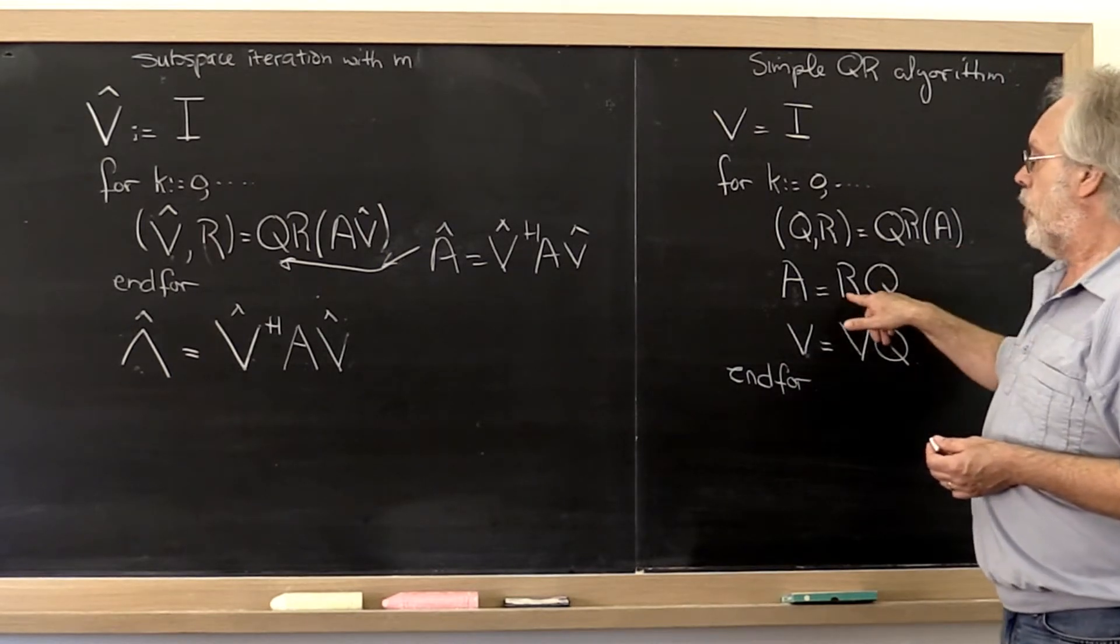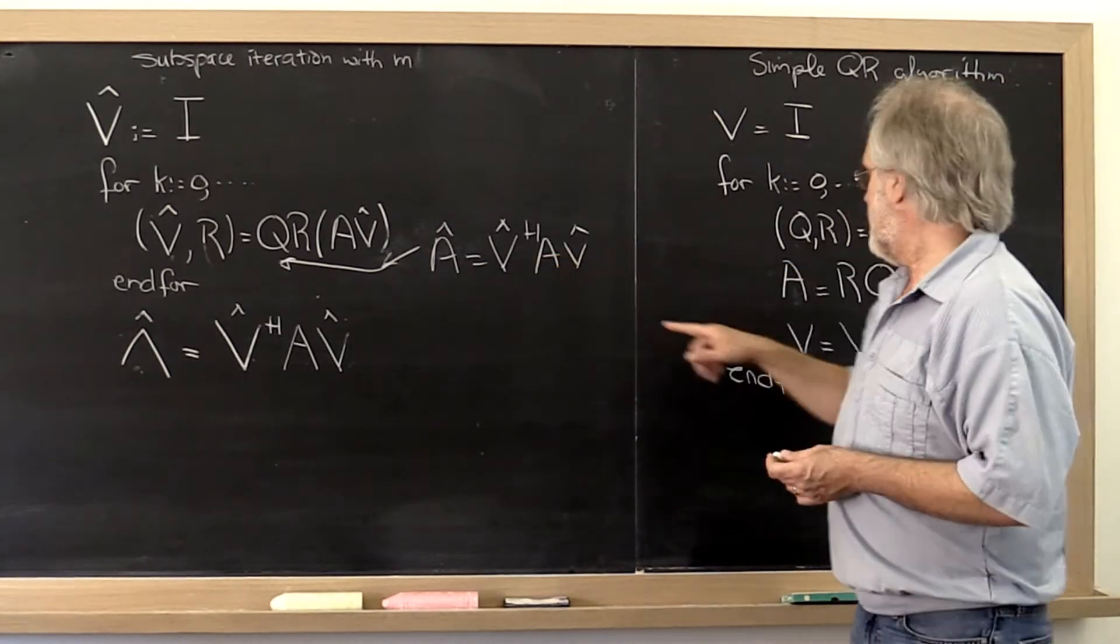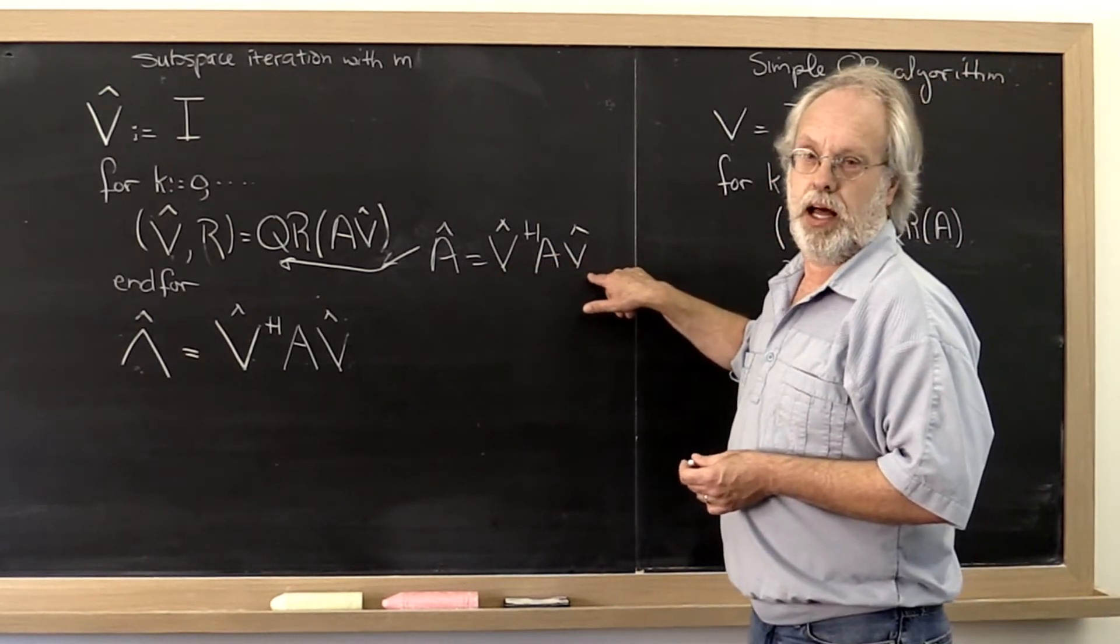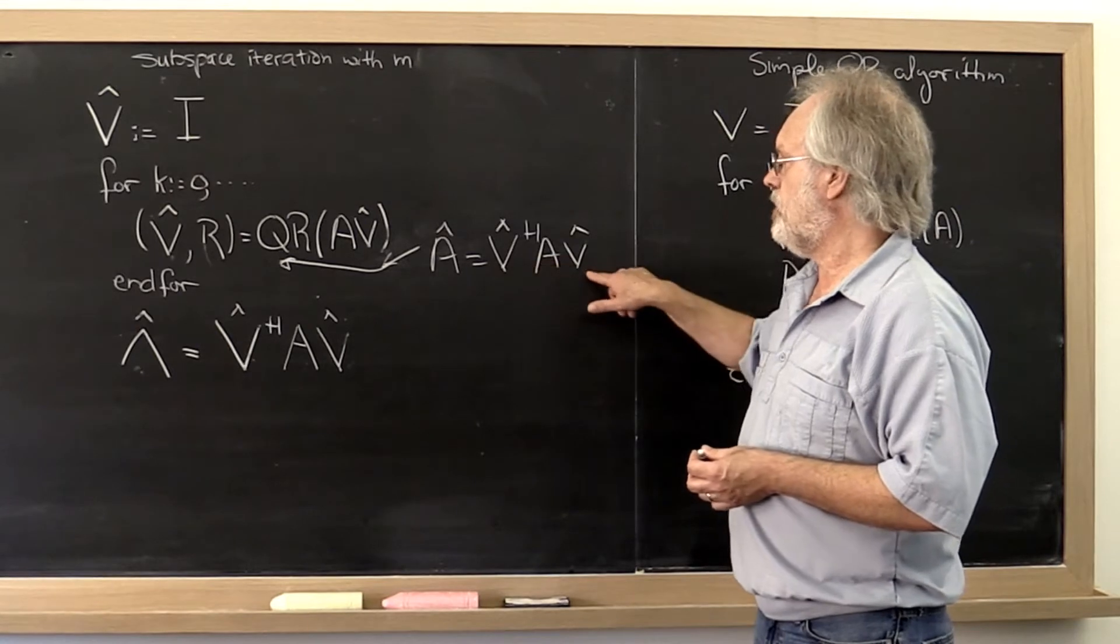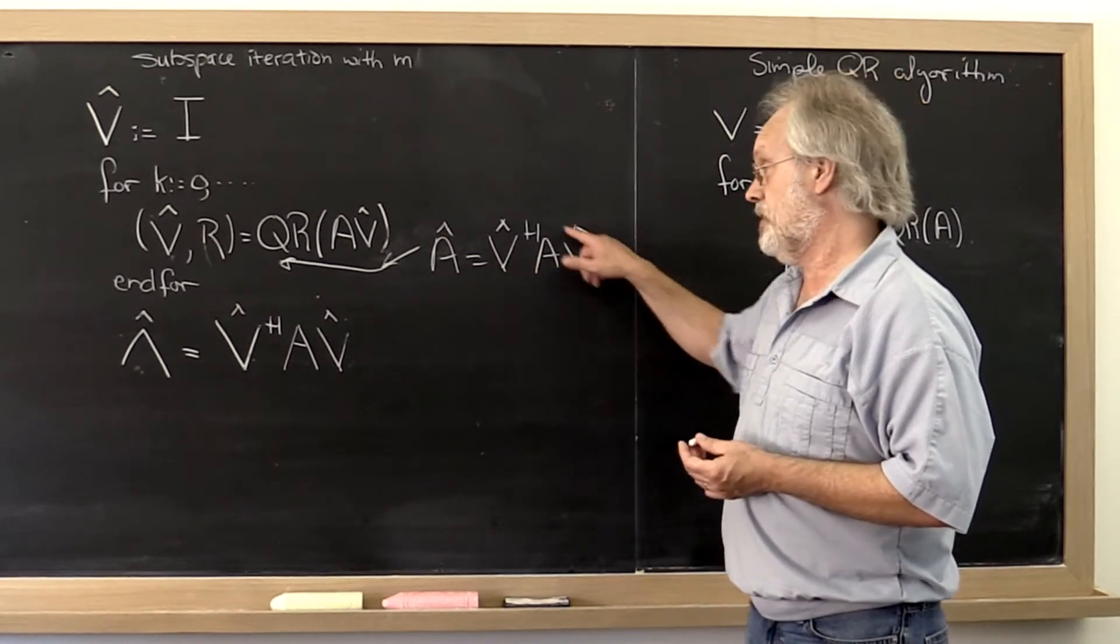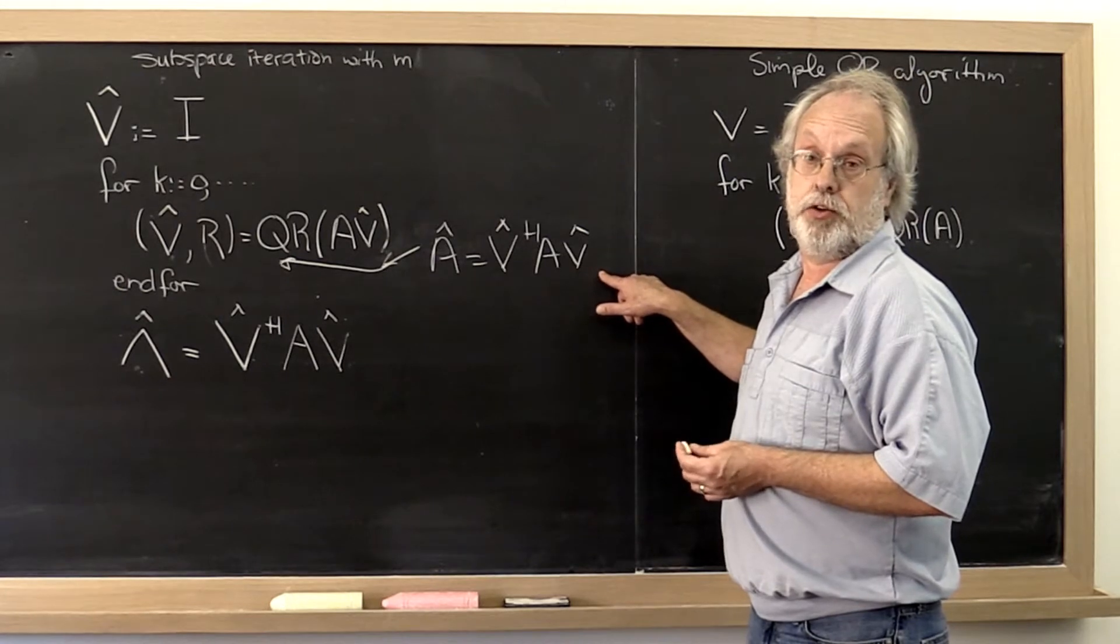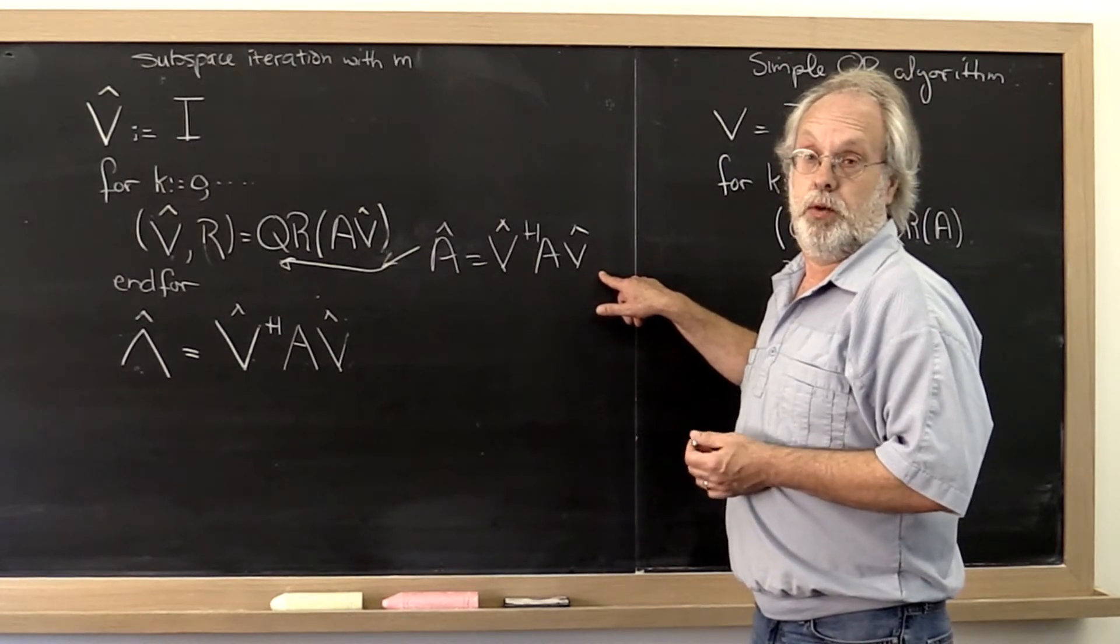And what we notice is that this matrix right here is really equal to this matrix right here. Now what did we learn about doing a unitary similarity transformation, which is what this computation here represents? This is a term that we discussed in week 9.